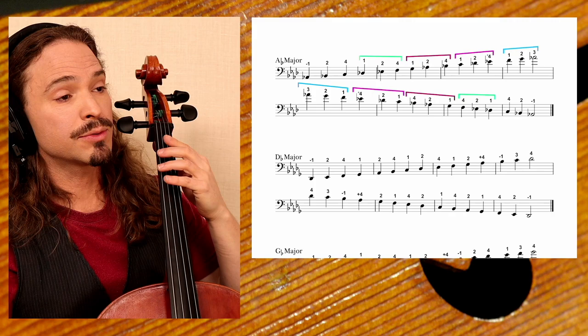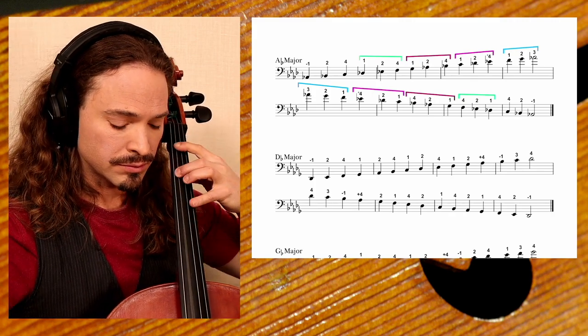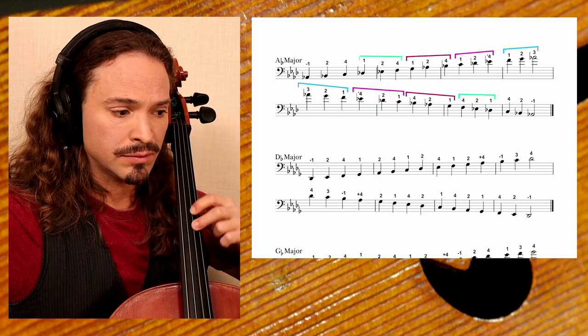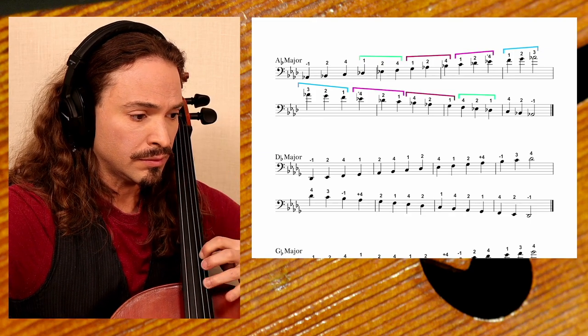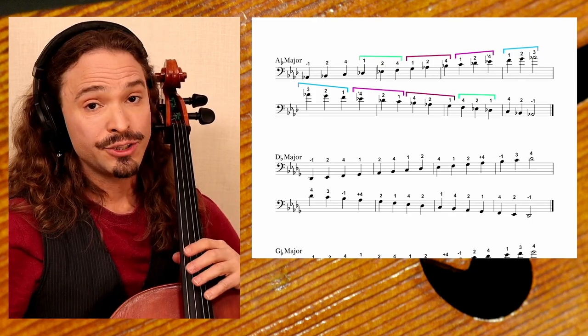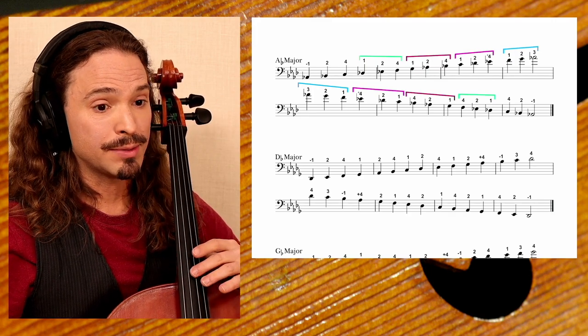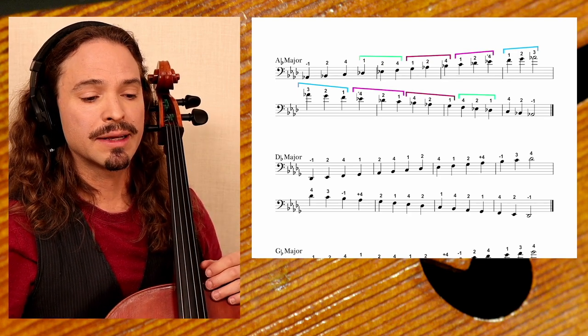We begin today's lesson, of course, with the Ab major two octave scale. And as you notice in the key signature, we have no open A, no open D. We can play an open G, but we don't play that low when we play this two octave scale.